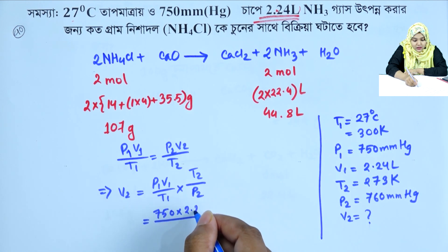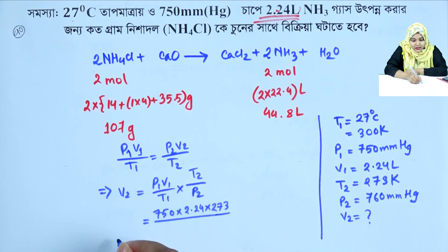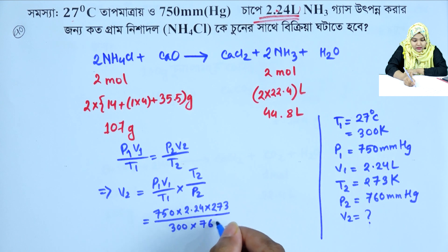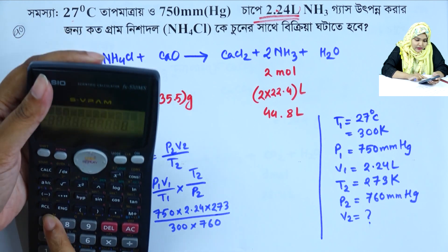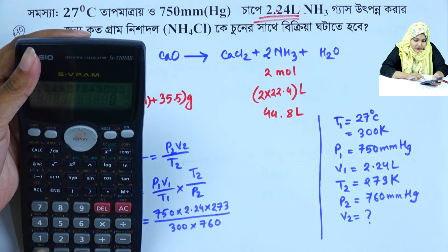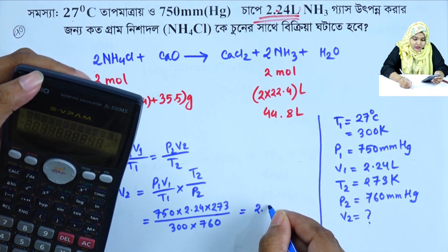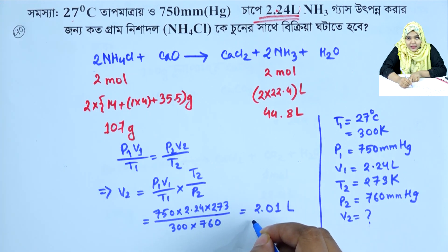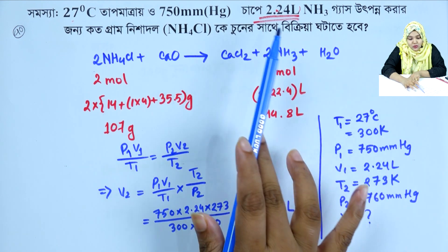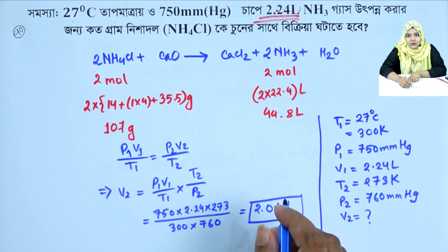Using the combined gas law: V2 = 750 × 2.24 × 273 divided by 300 divided by 760. That gives V2 equal to 2.01 litres. At STP the ammonia gas is 2.24 litres; in the given conditions the ammonia gas is 2.01 litres.